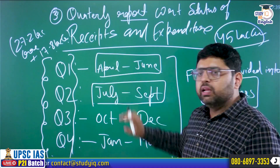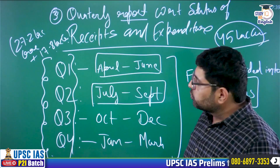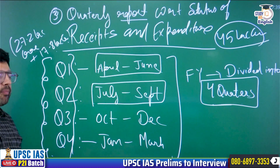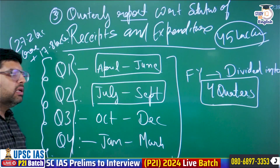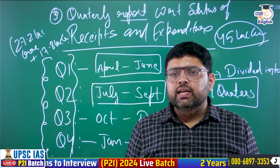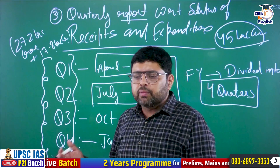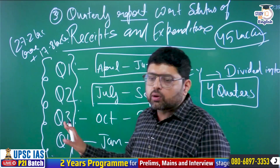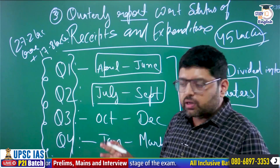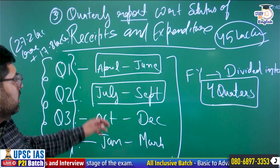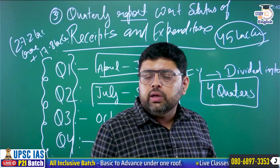So FRBM Act imposes a limit only on the borrowing of the government — it never imposes a limit on expenditure and receipts. If expenditure is increasing, the government has to find other sources to increase receipts. So if a question says the FRBM Act imposes restrictions on expenditure and receipts of the government, your answer will be no. FRBM Act only imposes a limit on borrowing.